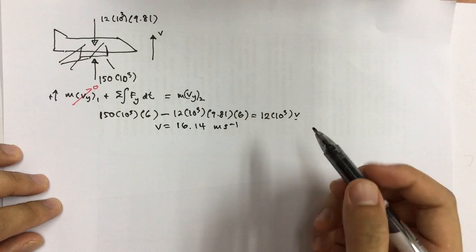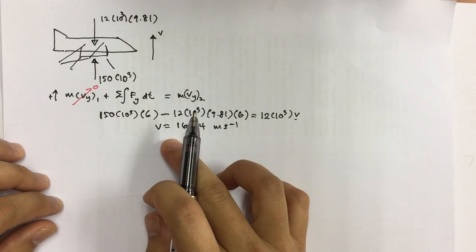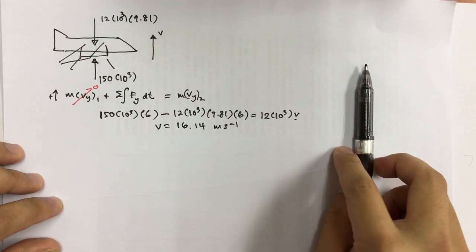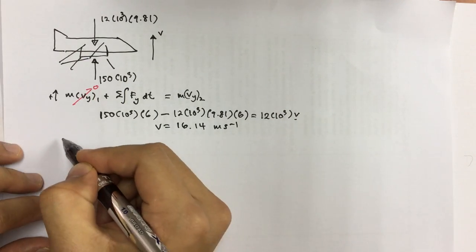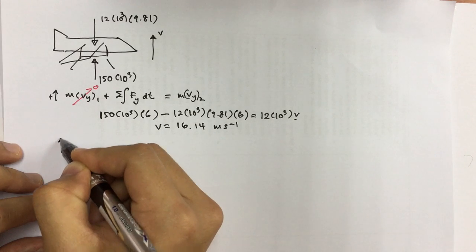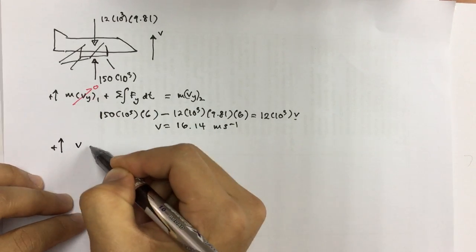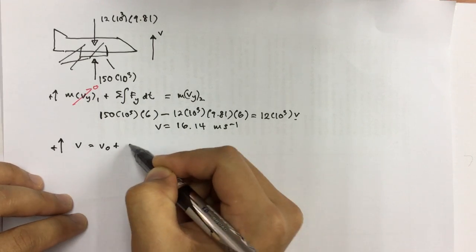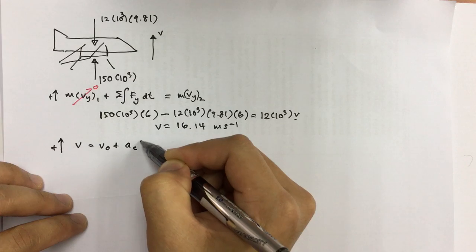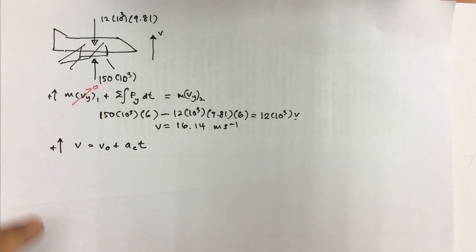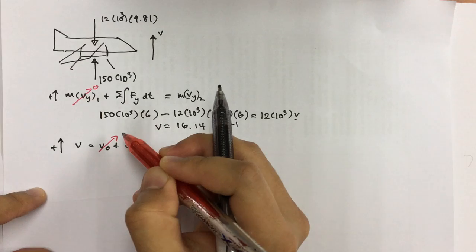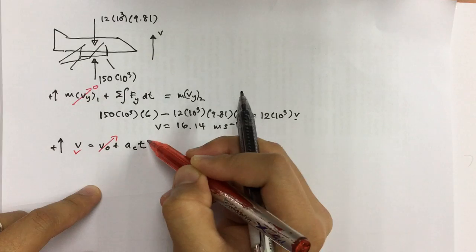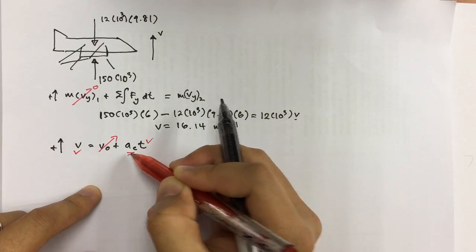So since we know the velocity and we want to calculate the distance, we first need to calculate the acceleration. So as usual, we can use the equations that we learned in chapter 12. So the final velocity equals to the first velocity, the initial velocity, plus the acceleration times t. And now we know the initial velocity is equal to zero. And then now we know we have done the velocity, and we know the time. So we need to measure the acceleration.